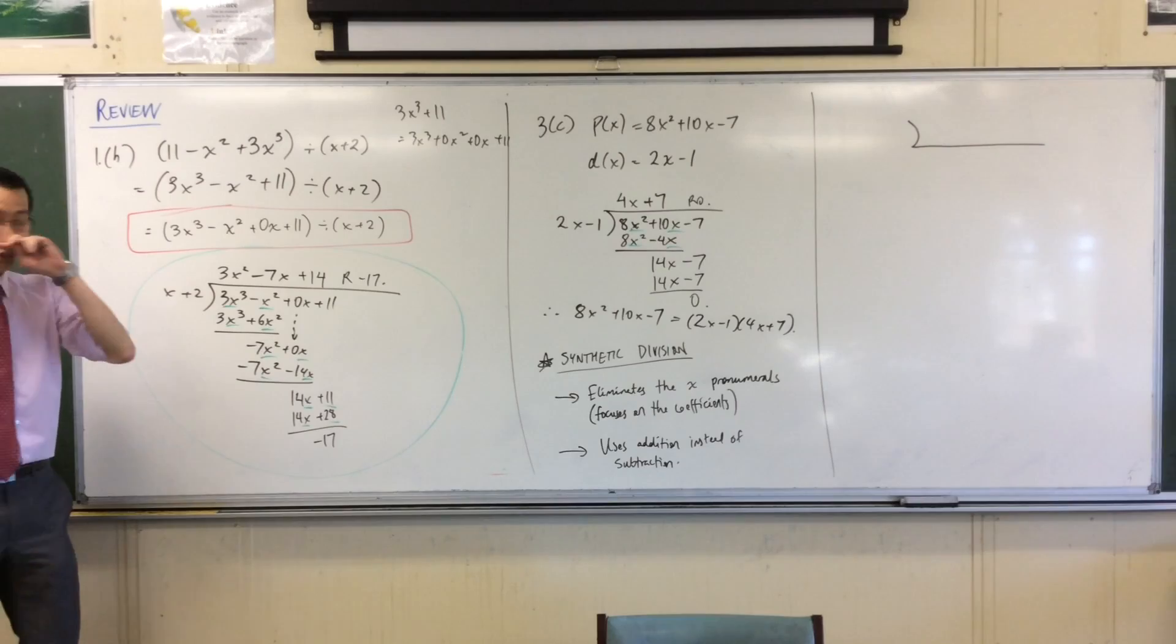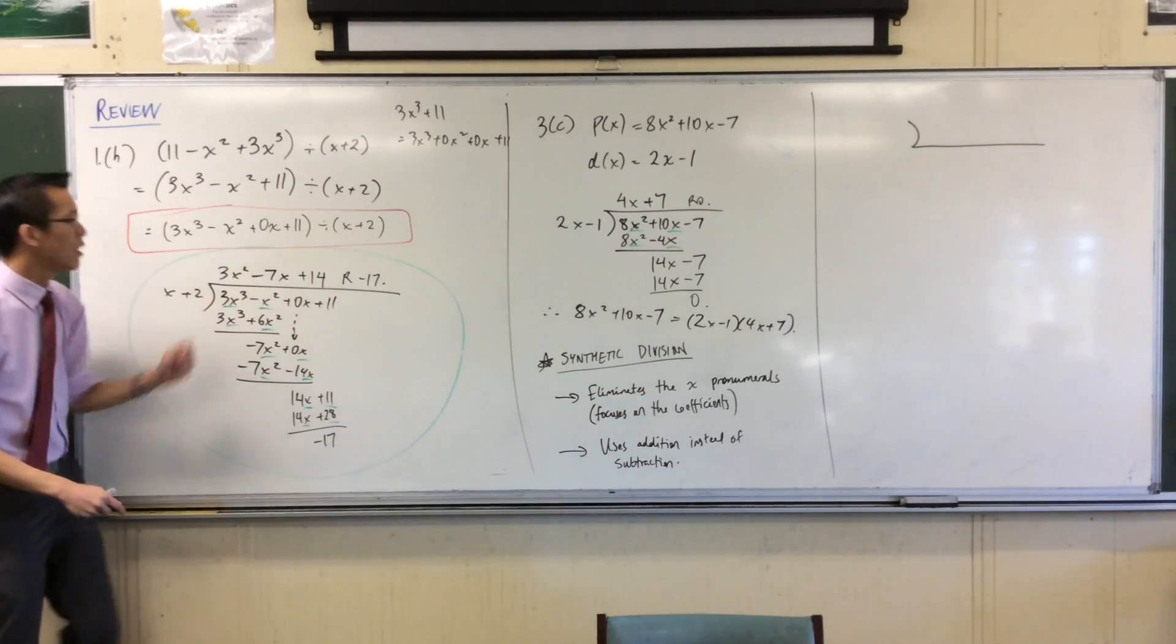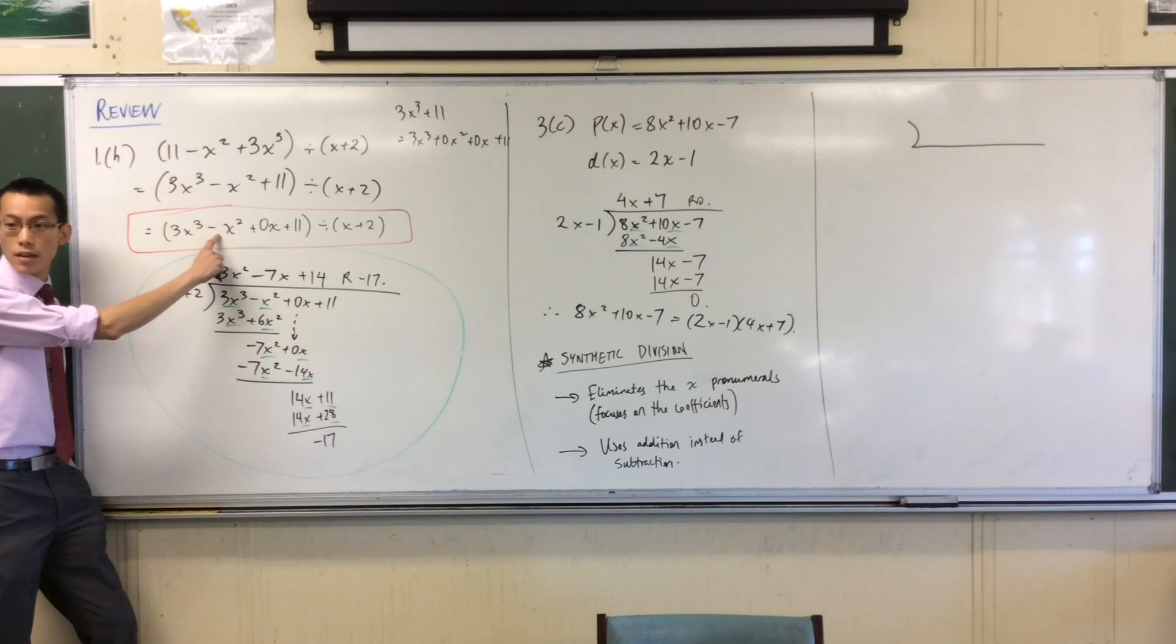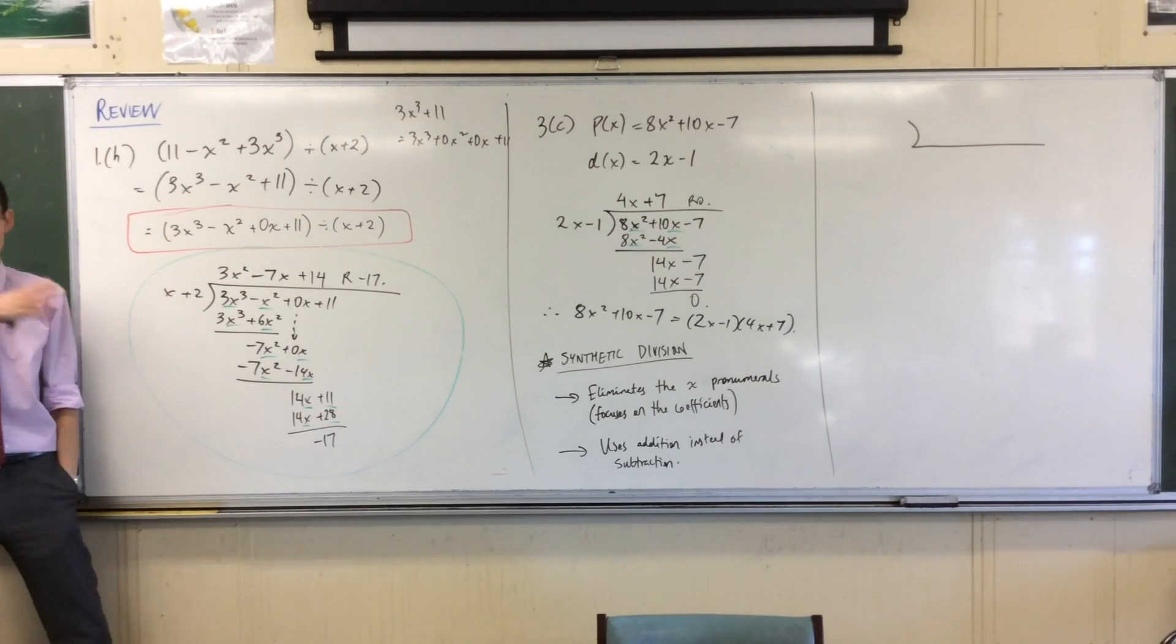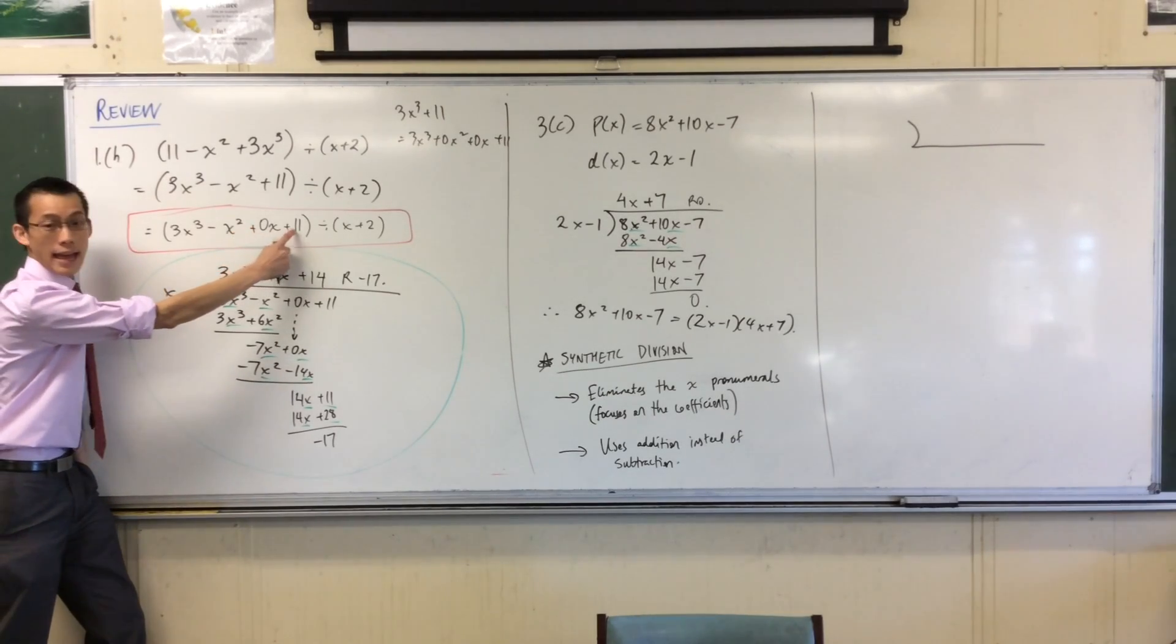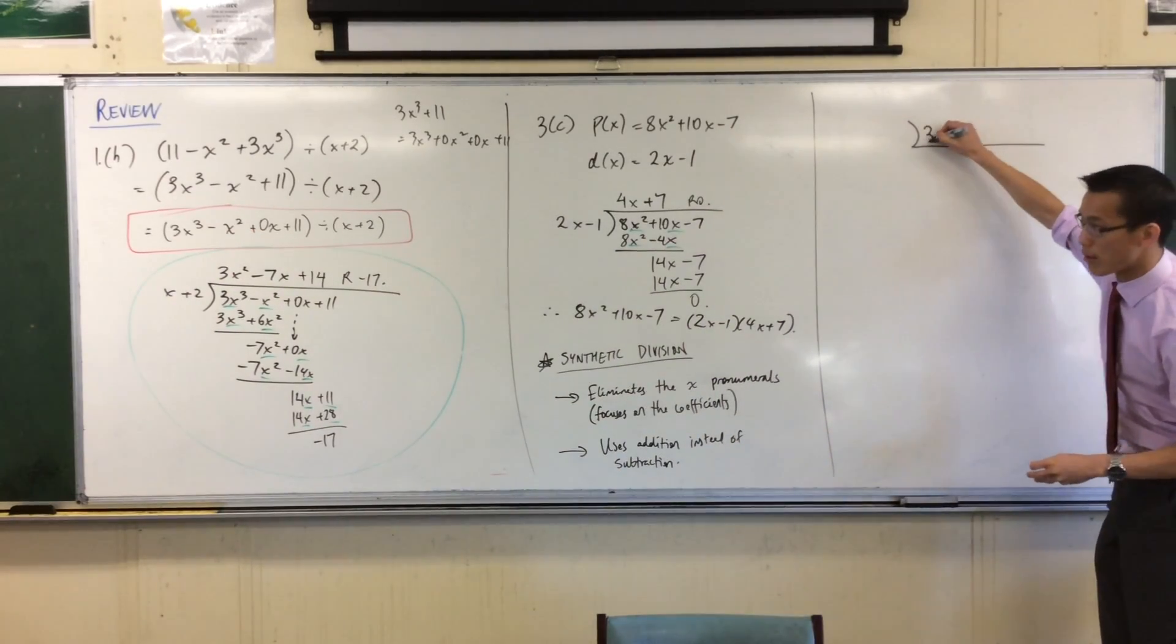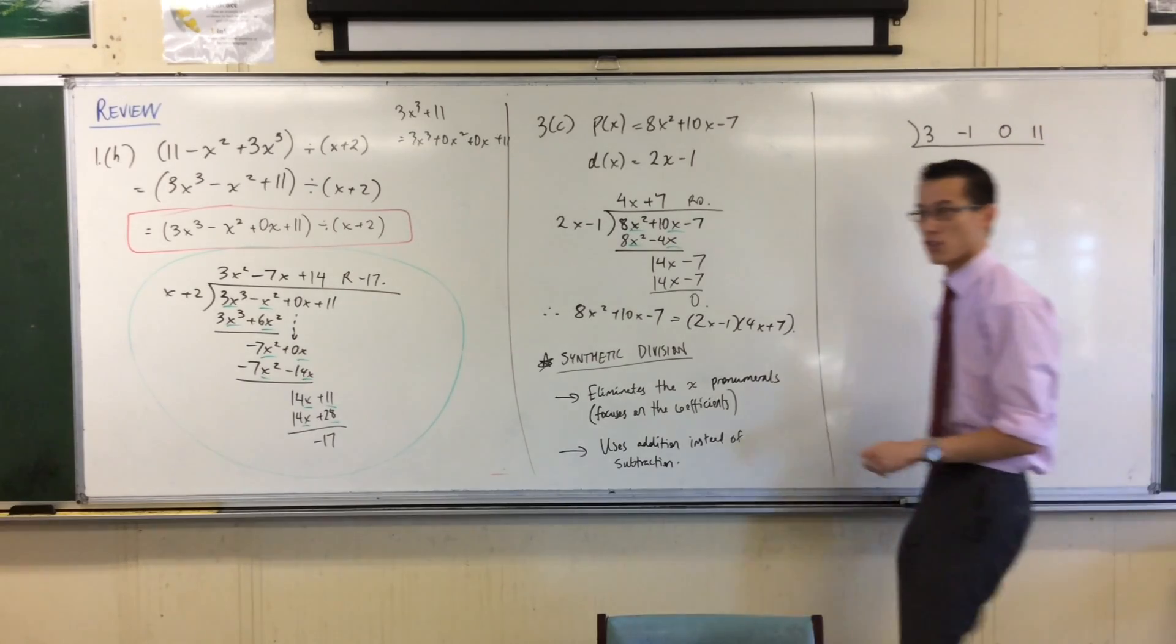Secondly, what we're going to do is we're going to write, again, the focus is on the coefficients, the coefficients. So I'm going to take all the coefficients in the dividend, which are, read them out with me, 3, and then, careful, negative 1, there's a minus sign, which kind of matters. If there was a plus, it would be a totally different answer. Minus 1, 0, and 11. 1, 2, 3, 4 numbers. I'm just going to write those numbers down. The numbers are what matter, so I'm going to go, 3, negative 1, 0, 11.